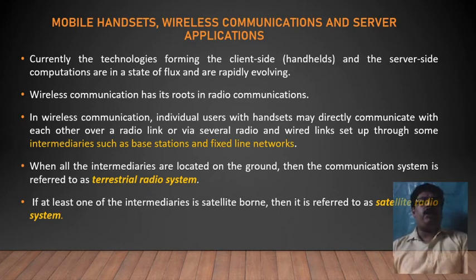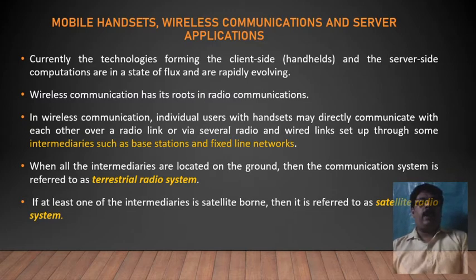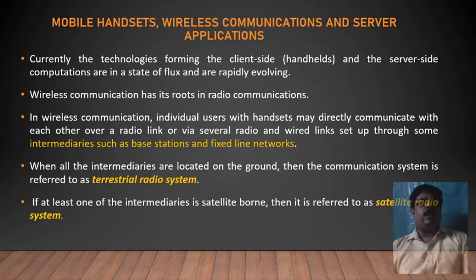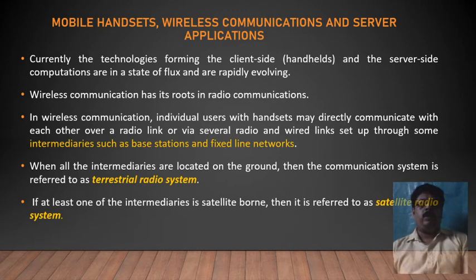Wireless communication uses radio communication. In Wi-Fi, individual users with a handset may directly communicate with each other. In some situations, there are intermediates such as base stations and fixed-line networks. When all intermediates are on the ground, the communication system is referred to as a terrestrial radio system. If at least one intermediate is satellite-borne, it is referred to as a satellite radio system.